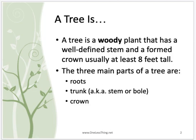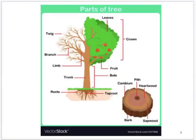The tree has three main parts: the roots, the trunk — which is broken into the stem or bole, it can be referred to as either — and then the crown. We're going to go over all of the parts, and I'm going to break it down into those three main sections.